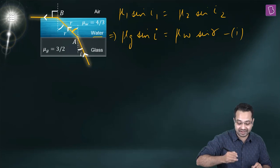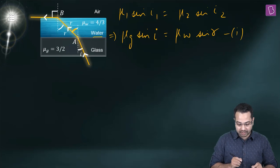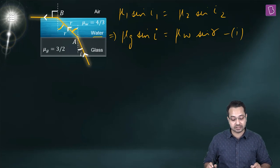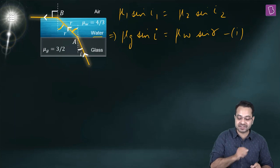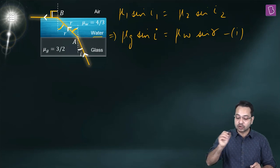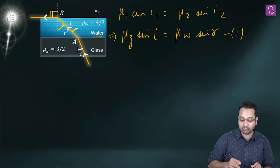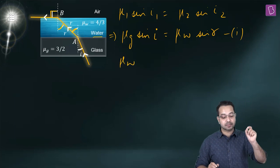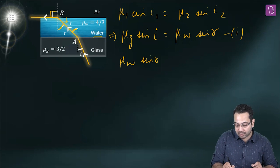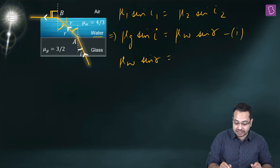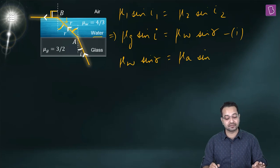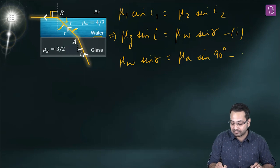Now for refraction at the water-air boundary: if the refraction angle at the first boundary is r, then by alternate angles, the angle of incidence at this boundary is also r. The angle of refraction here is 90°, since the ray emerges parallel to the surface. Applying Snell's law: μ_water × sin r = μ_air × sin 90°.